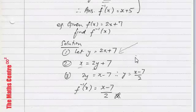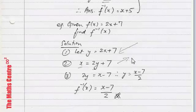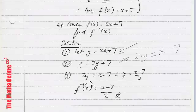And the last step is, of course, to write y as the subject. So, if you pick up from here, 2y equals to x minus 7. And you can see it. I've written it for you. Therefore, y equals to x minus 7 over 2.